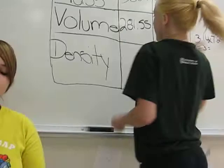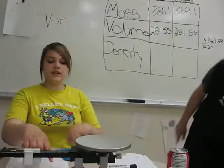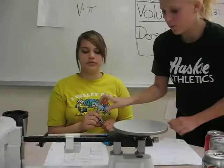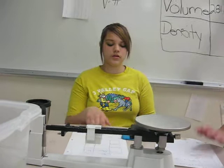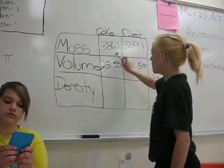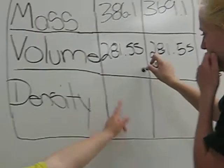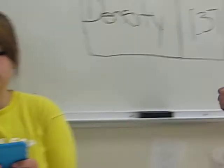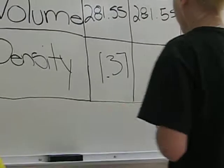Okay, anyway, now let's do the density. What is mass divided by volume? Which is 386.1 divided by 281. That equals 1.37. And that equals 1.31.